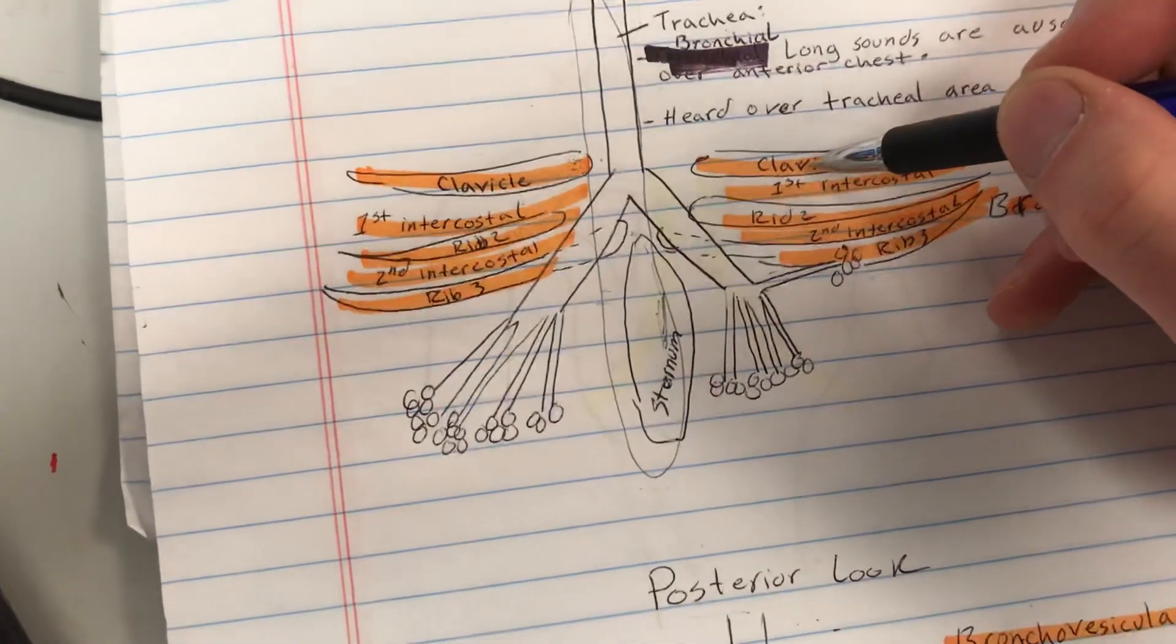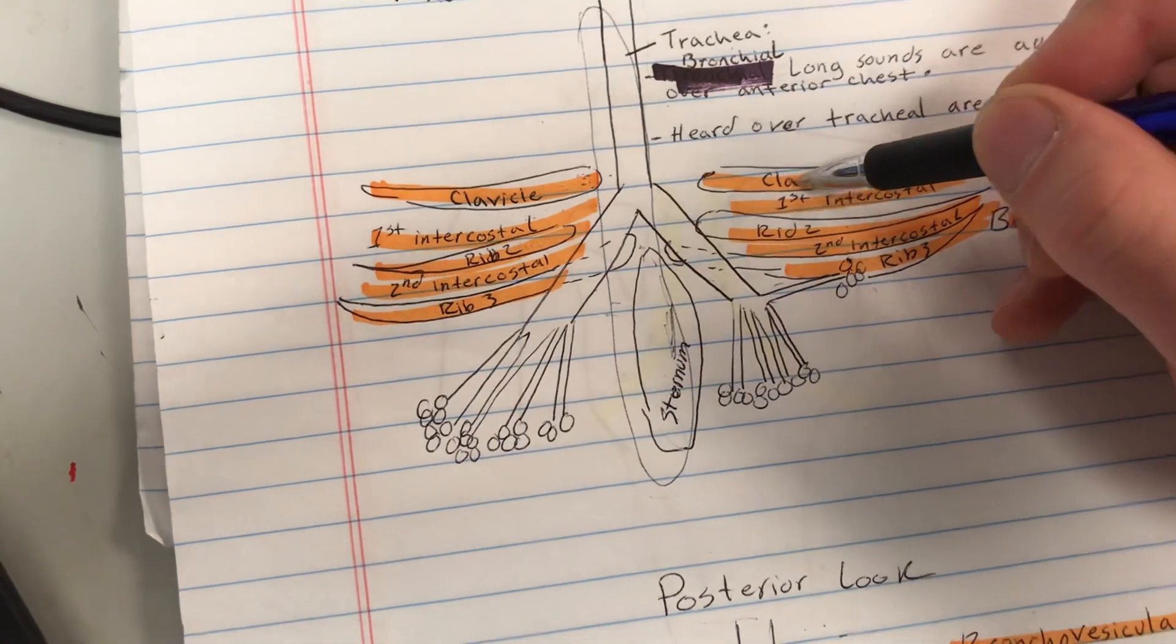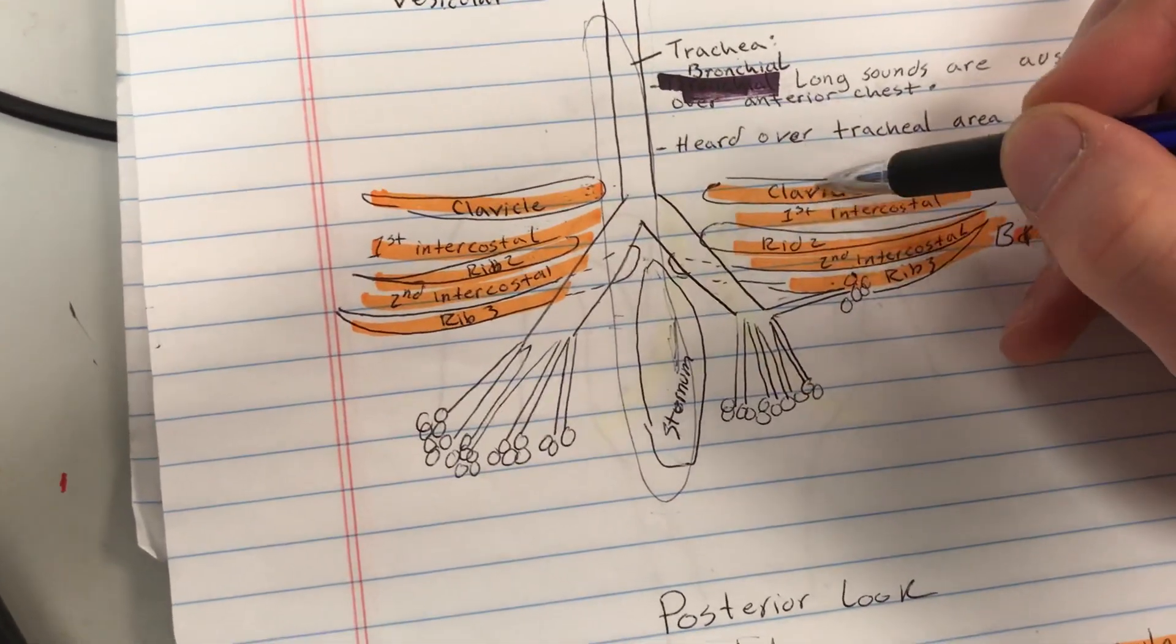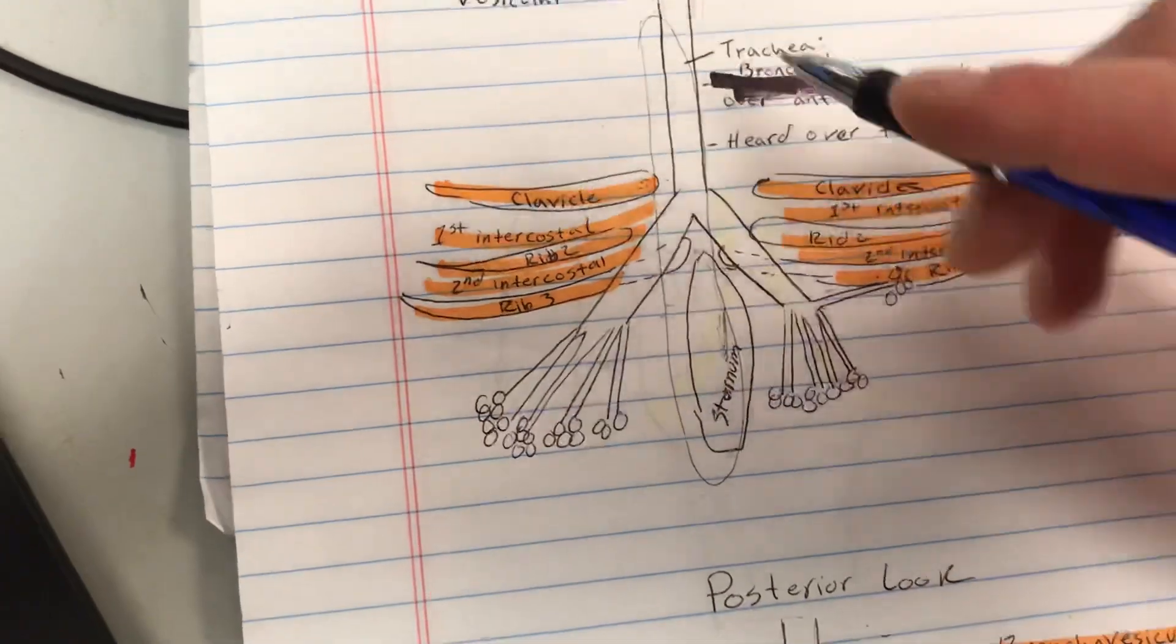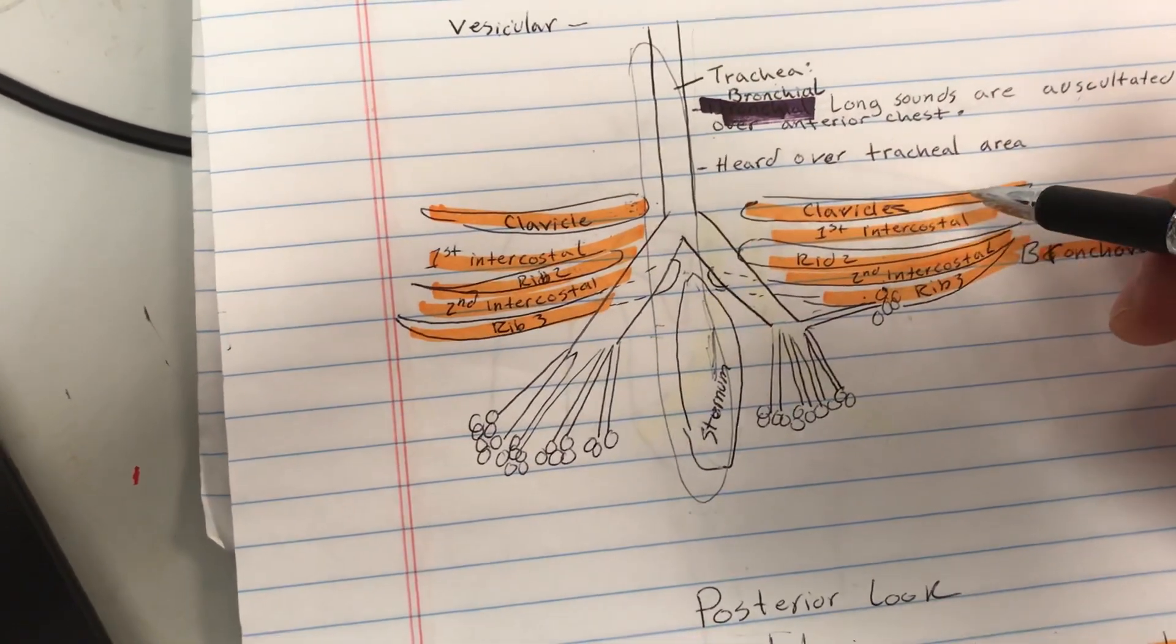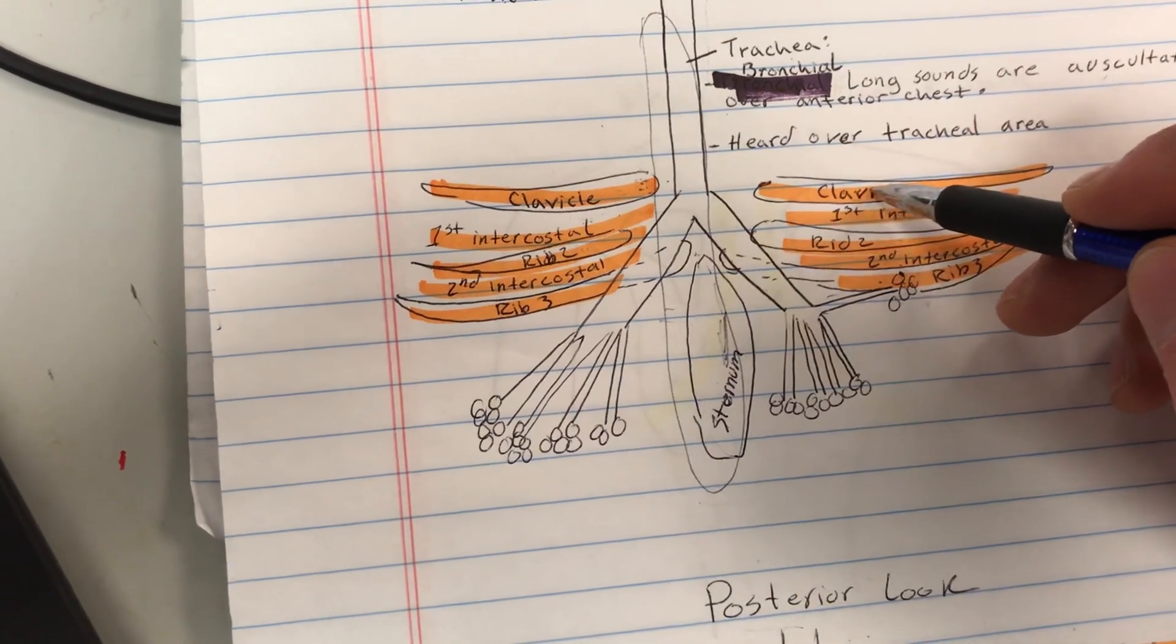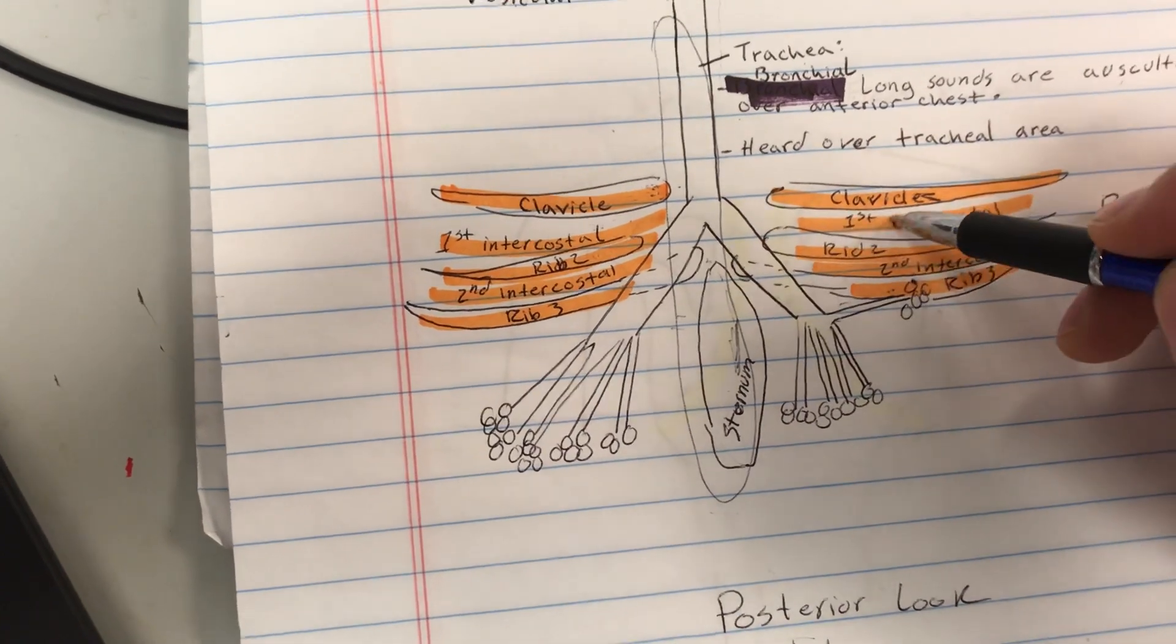This means that you're going to find the lung sounds between the first and second rib and or between the second and third rib. And the reason I put clavicle here where the first rib goes is because the clavicle overlaps over the first rib. So whenever we count the ribs, we usually count the clavicle as the first rib because it lies over the first rib, and then we count downward.